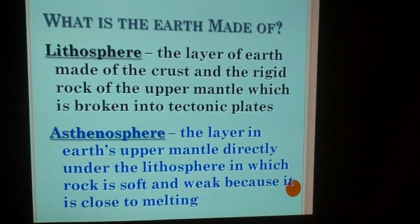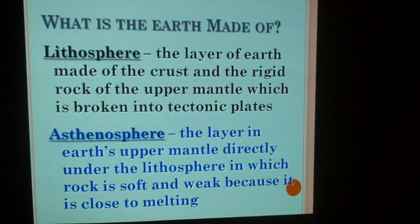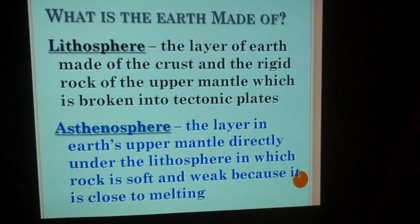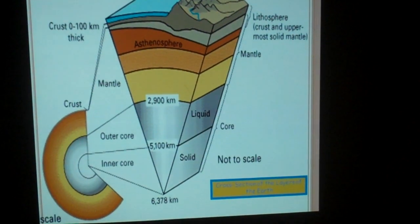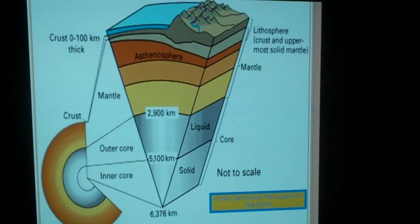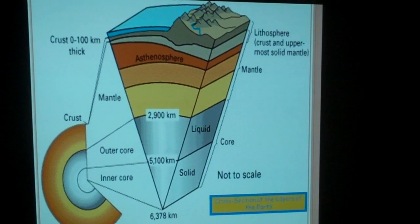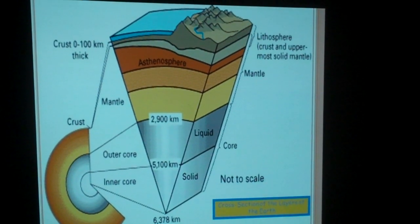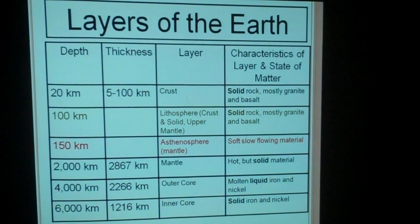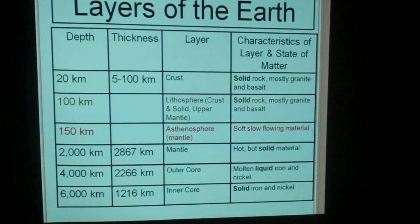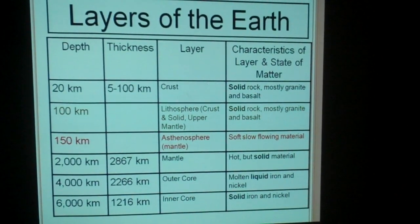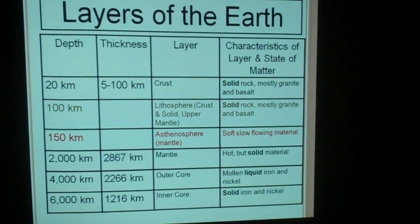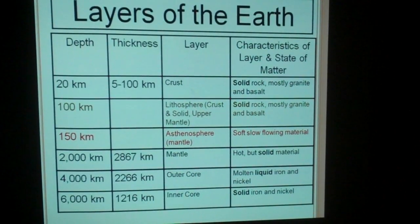Here you have your definitions for lithosphere and asthenosphere. Remember that you can always refer to the paper copy of the notes and the PowerPoint to copy down the definitions. Here's another visual of the cross-section of the layers where you can see the lithosphere is all of the crust and the upper solid part of the mantle, and the asthenosphere is the soft layer at the very top part of the mantle. This chart shows you the different thicknesses of each layer, the depth of the layers into the core of the Earth, and the characteristics — what the layer is composed of, what types of rocks, and its state of matter. Notice that only one layer is liquid.